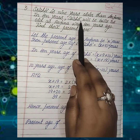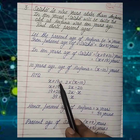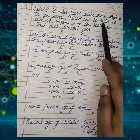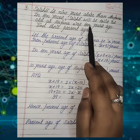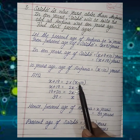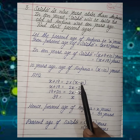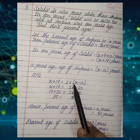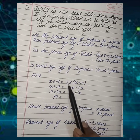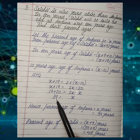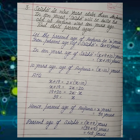According to the question, make the equation: Srishti's age after 10 years equals twice Anjana's age 10 years ago. That is x plus 19 equals 2 into (x minus 10). Solving: 2 times x is 2x, 2 times 10 is 20. After solving this linear equation, we get x equals 39. So the present age of Anjana is 39 years, and the present age of Srishti will be x plus 9, that means 48 years.